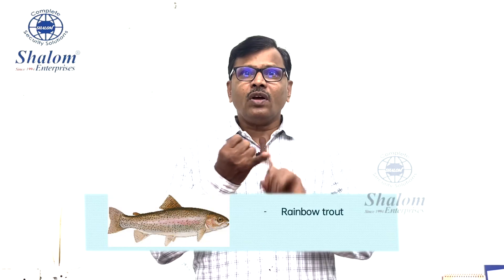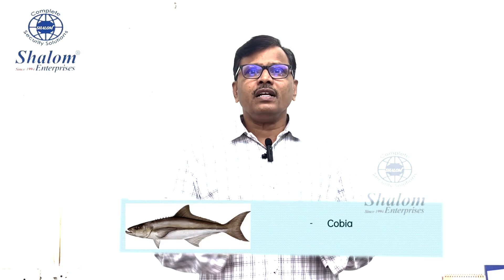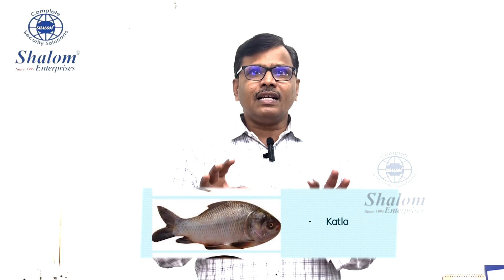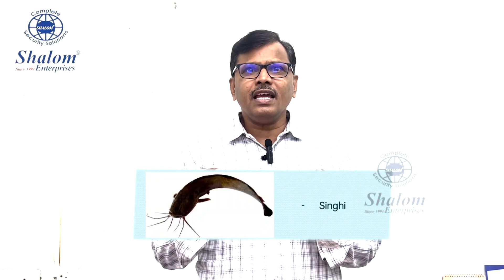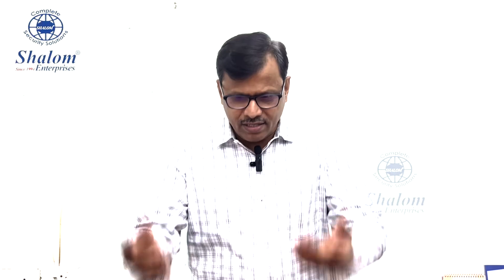Species that can be grown in a recirculatory aquaculture system include rainbow trout, pangasius, sea bass, cobia, murrel, tilapia, catla, singhi, shrimp, eel, and more.